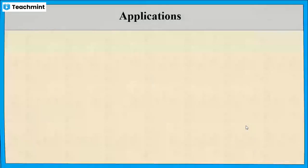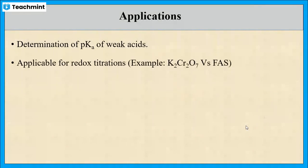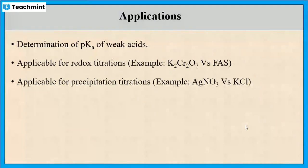Next, let us see the applications. Potentiometric titration is used to determine the pKa of weak acids, and is applicable for redox titrations as well as precipitation titrations.